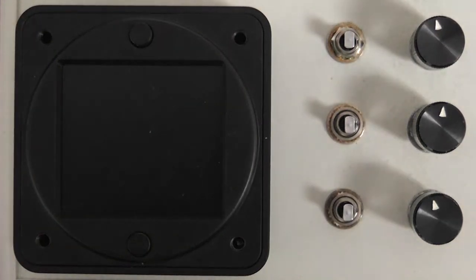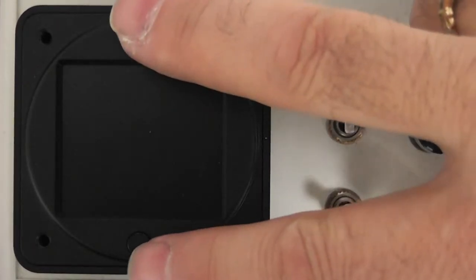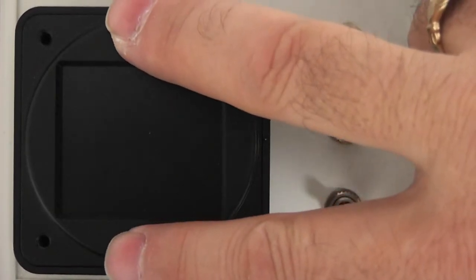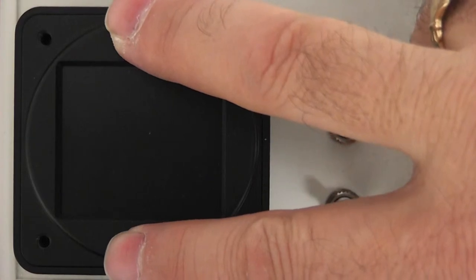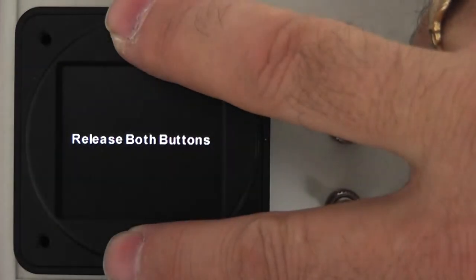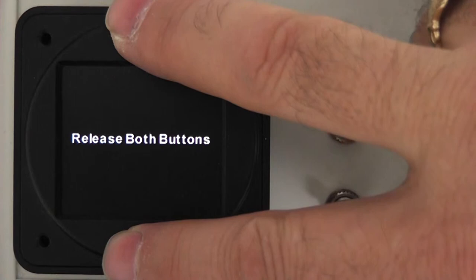Setting up the CAT202 instrument is a simple procedure. Start with the instrument turned off, press both the top and bottom buttons simultaneously and apply power to the instrument. Release the buttons when you're instructed to.